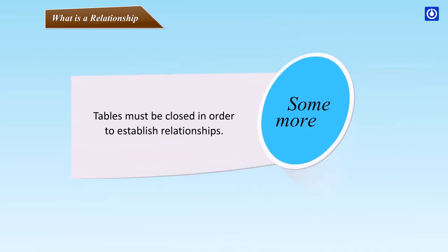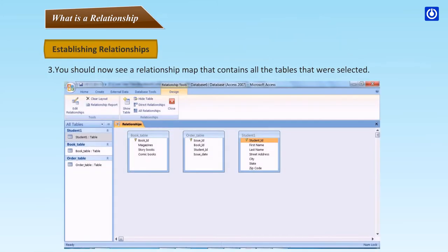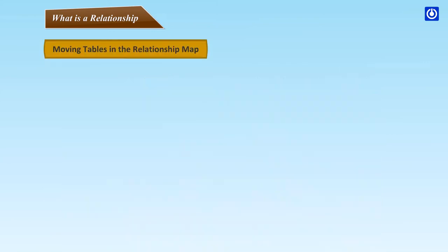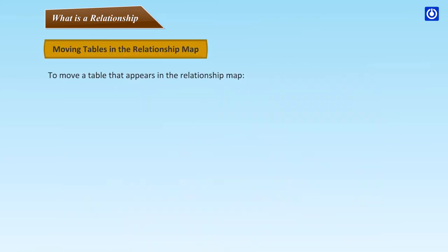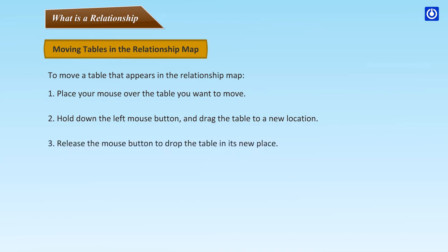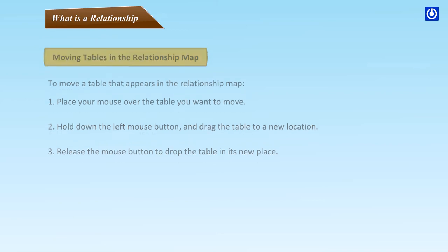Tables must be closed in order to establish relationships. You should now see a relationship map containing all the tables that were selected. To move a table in the relationship map, place your mouse over the table, hold down the left mouse button, drag the table to a new location, and release the mouse button to drop it in its new place.